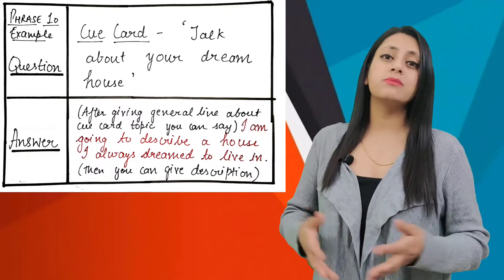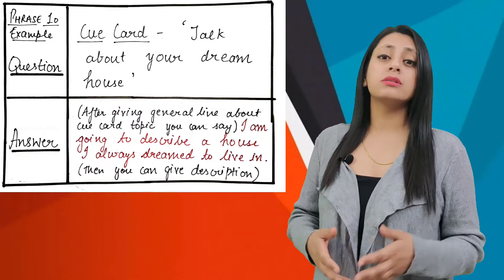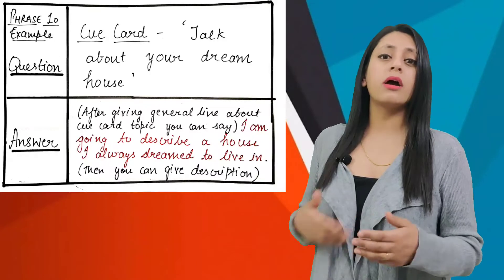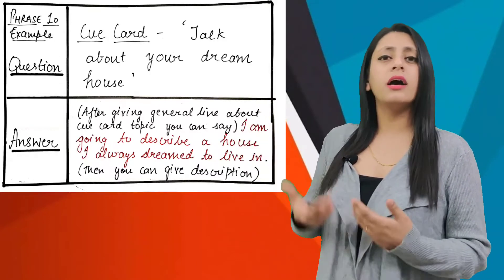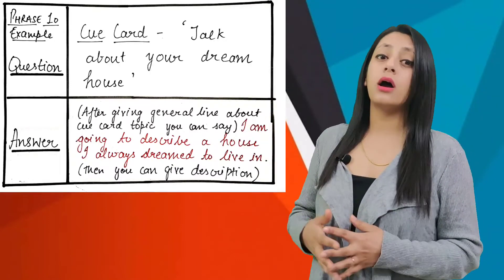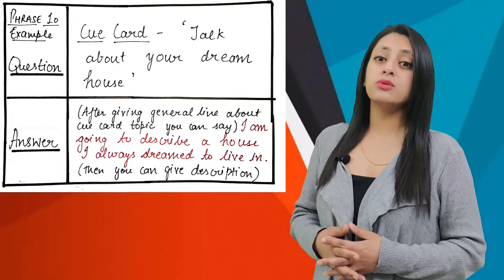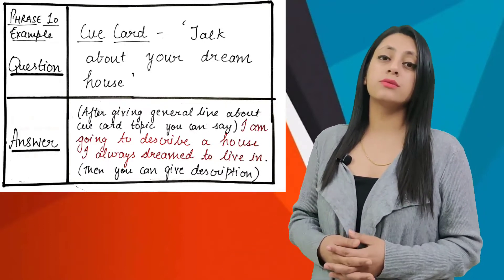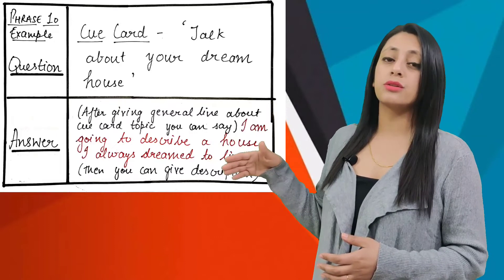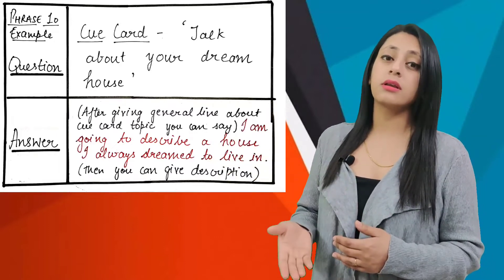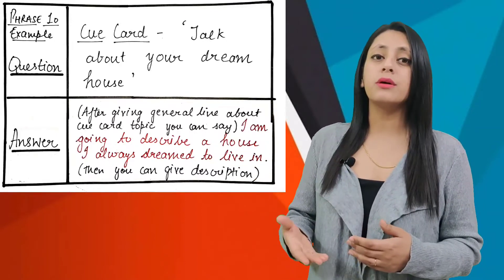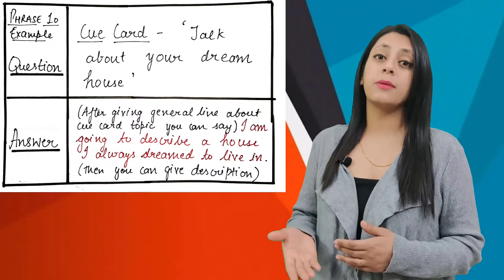For example, if your cue card is tell me about your dream house, you have to use this phrase: I am going to describe a house I always dream to live in. Then you can give a description of the house. This is how you can use this phrase when you begin your answer so the examiner knows what you're going to describe.